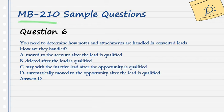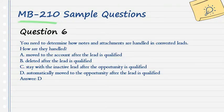Question 6. You need to determine how notes and attachments are handled in converted leads. How are they handled? A. Moved to the account after the lead is qualified. B. Deleted after the lead is qualified. C. Stay with the inactive lead after the opportunity is qualified. D. Automatically moved to the opportunity after the lead is qualified. Answer: D.